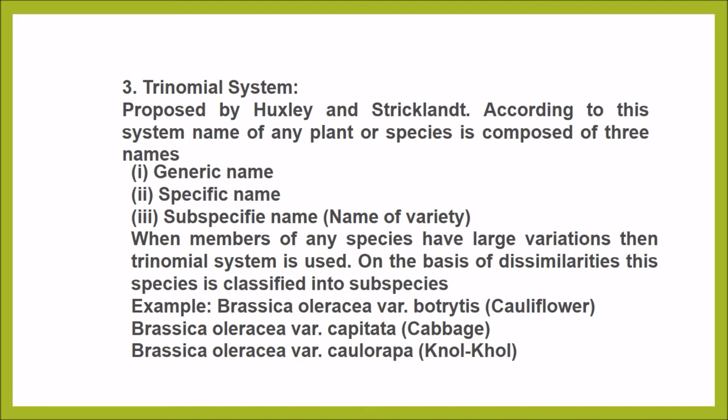Trinomial system — according to this system of naming, any plant or species is composed of three names: generic name, specific name, and sub-specific name. When members of any species have large variations, the trinomial system is used. On the basis of the dissimilarities, the species is classified into subspecies. For example, Brassica oleracea var. botrytis is cauliflower, and other varieties include cabbage and kohl-rabi.